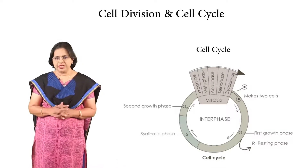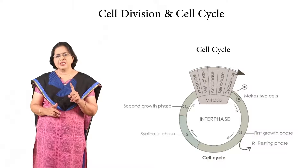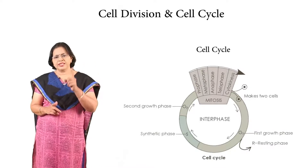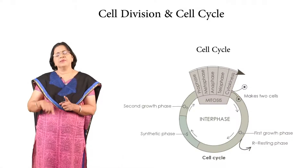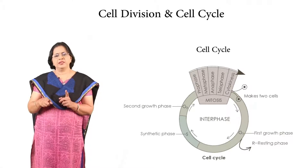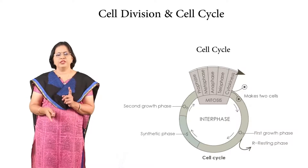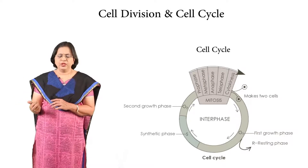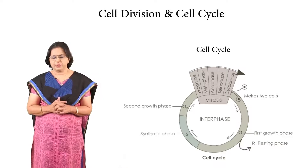All cells go through this cycle. Reproductive cells have, besides prophase, metaphase, anaphase, telophase, and cytokinesis, an additional set: prophase 2, metaphase 2, anaphase 2, telophase 2, and then cytokinesis. So that is the difference between them.